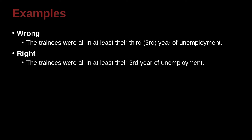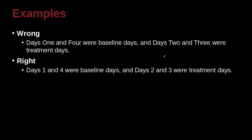The trainees were all in at least their third year of unemployment. Here, although it's spelled out in the example, we can just write the numeral 3, because it's in a series. Similarly: 'Days 1 and 4 were baseline days, and days 2 and 3 were treatment days.' We're tempted to spell them out, but we don't want to do that because even though it's less than 10, it's in a series and we're comparing them. So in that case, we write them as numerals. When you have a series of numbers inside a sentence, you're not going to spell them out even if they're less than 10.